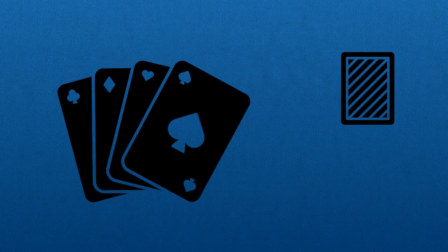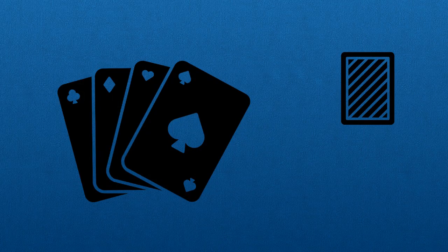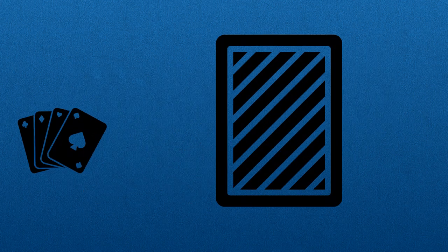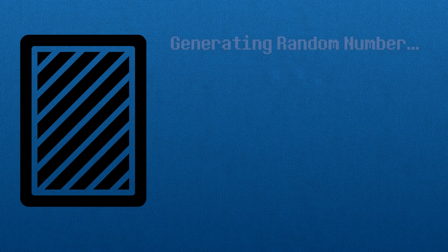Say, for example, you're playing cards in the game and you're about to draw the next card from the deck. How does the game decide what card you pull? Well, it asks the Random Number Generator to pull a random number, and it pulls, for example, a 78. The game knows that 78 represents a seven of diamonds, so that's the card the player pulls. Simple, right? Well, not exactly.